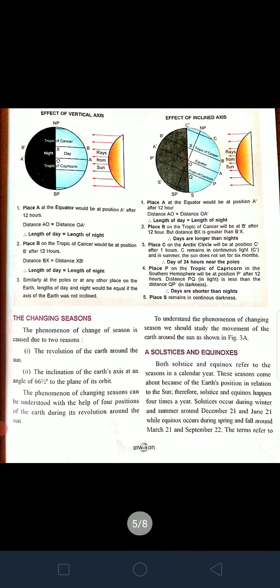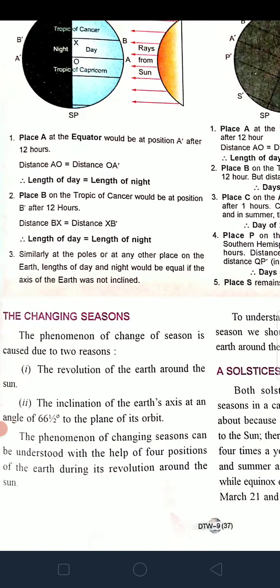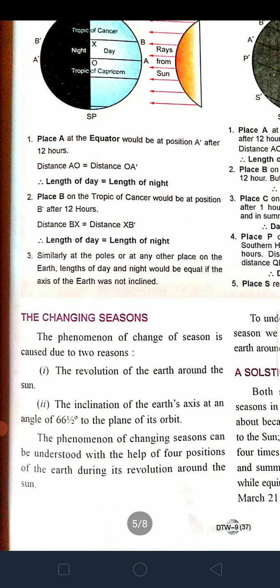The phenomenon of change of season is due to two reasons: first, the revolution of the earth, and second, the inclination of the earth's axis at an angle of 66.5 degrees towards the orbital plane.